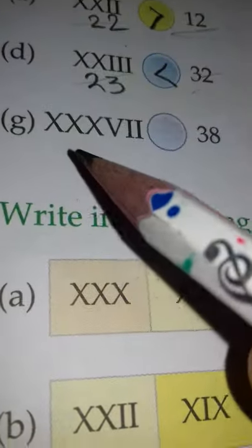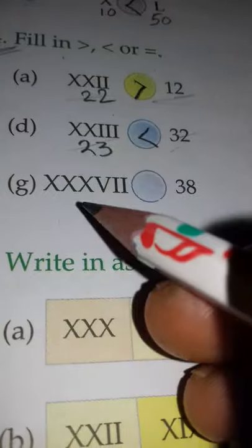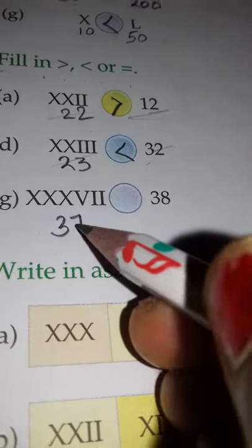Part (g): XXXVII is given. XXX means 30, and VII means 5 plus 2, which is 7, so 37. This side is 37 and the other side is given as 38, so this side is greater - 38 is greater than 37.